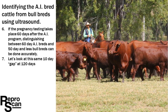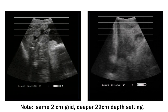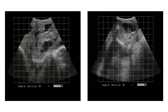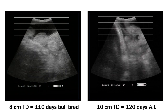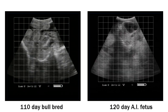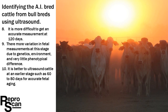Let's now look at the same 10-day gap. Here we have a 110-day bull-bred on the left and the right video clip is a 120-day AI. The trunk diameter on the left is 8 centimeters, 10 on the right, and what I'd like you to appreciate here is phenotypically the fetuses look the same — one is just a little larger and it's more difficult to accurately get that measurement. It is more difficult to get an accurate measurement at 120 days because there's more variation in fetal measurements at this stage due to genetics, environment, and very little phenotypical difference. So it is better to ultrasound cattle at an earlier stage, such as 60 to 80 days, for accurate fetal aging.